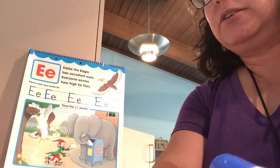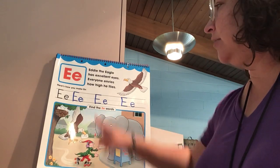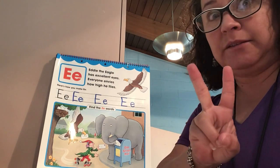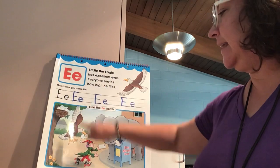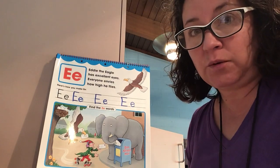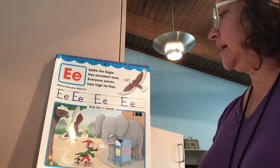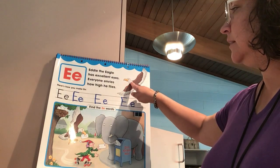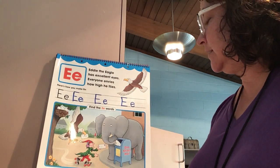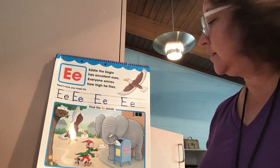Spend some time with mom and dad looking at the chart to find out what items have the E sound. E is our first vowel, and you're going to learn this as you get older — it has two sounds: E like an elephant and E like an eagle. Short E and long E. We know that eagle says the long E and elephant says the short E sound, so you can look at the pictures and find out what has those sounds.